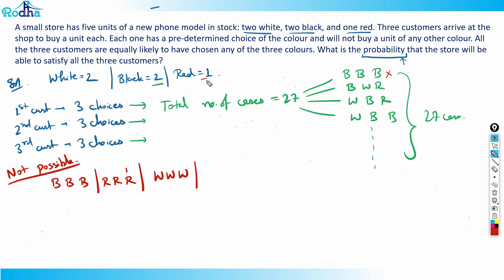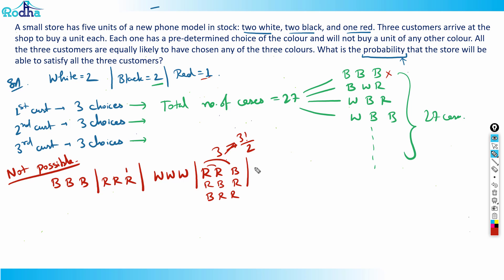Since there is only one red phone, any case with two reds is also impossible. Two-red-one-black gives three arrangements: red-red-black, red-black-red, and black-red-red — that's 3!/2! = 3 cases. Similarly, two-red-one-white is also impossible, giving another three cases: red-red-white, red-white-red, and white-red-red.